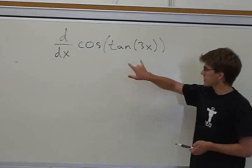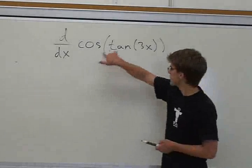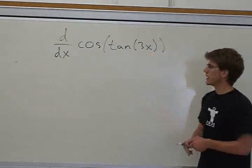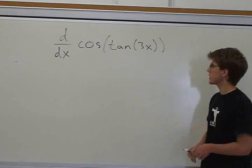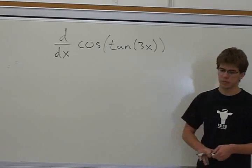OK, so we're trying to take the derivative of the cosine and the tangent of 3x. And the way we do this is we first notice that this is a chain rule problem.